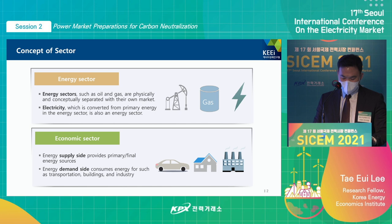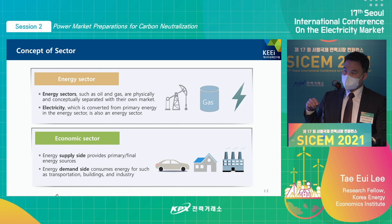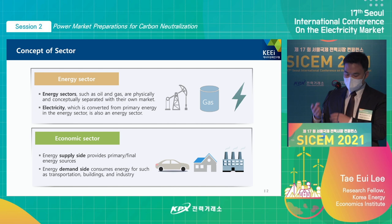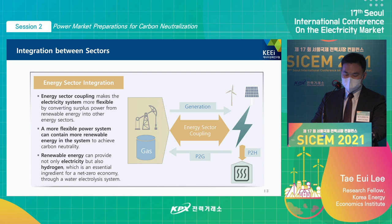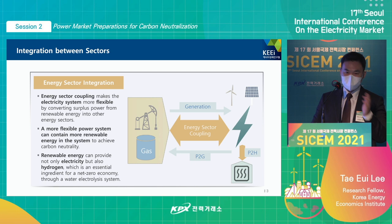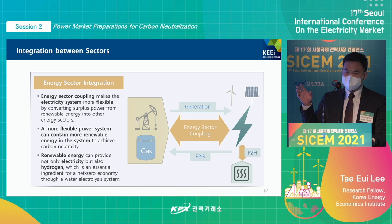Heat and secondary energy is also determined based on the supply and demand of each sector. As for the economic sector, we have the energy supply side and energy demand side. Supply of primary and secondary energy is on the supply side, and buildings, transportation, and industries are on the demand side. When we talk about integration of these sectors, the first thing we think about is energy sector integration — from primary energy to electricity and heat — which is a one-way direction.